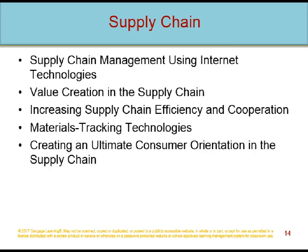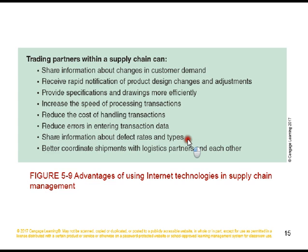A major issue in forming supply chain alliances is developing trust. Key elements are continual communication and information sharing. The internet and web provide excellent ways to communicate and share information, offering new avenues for building trust. They provide easy, inexpensive contact with customers, give buyers instant access to sales representatives, and provide comprehensive information quickly. Advantages of using internet technologies in supply chain management include: sharing information, rapid notifications, sharing specifications, increased speed, reduced cost, fewer errors, and better coordination.